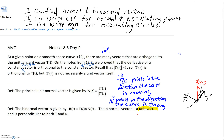Multivariable calculus, we're in section 13.3, day two. You can look at the top of the screen — we've got three learning targets: I can find normal and binormal vectors, I can write an equation for normal and osculating planes, and I can write an equation for an osculating circle.